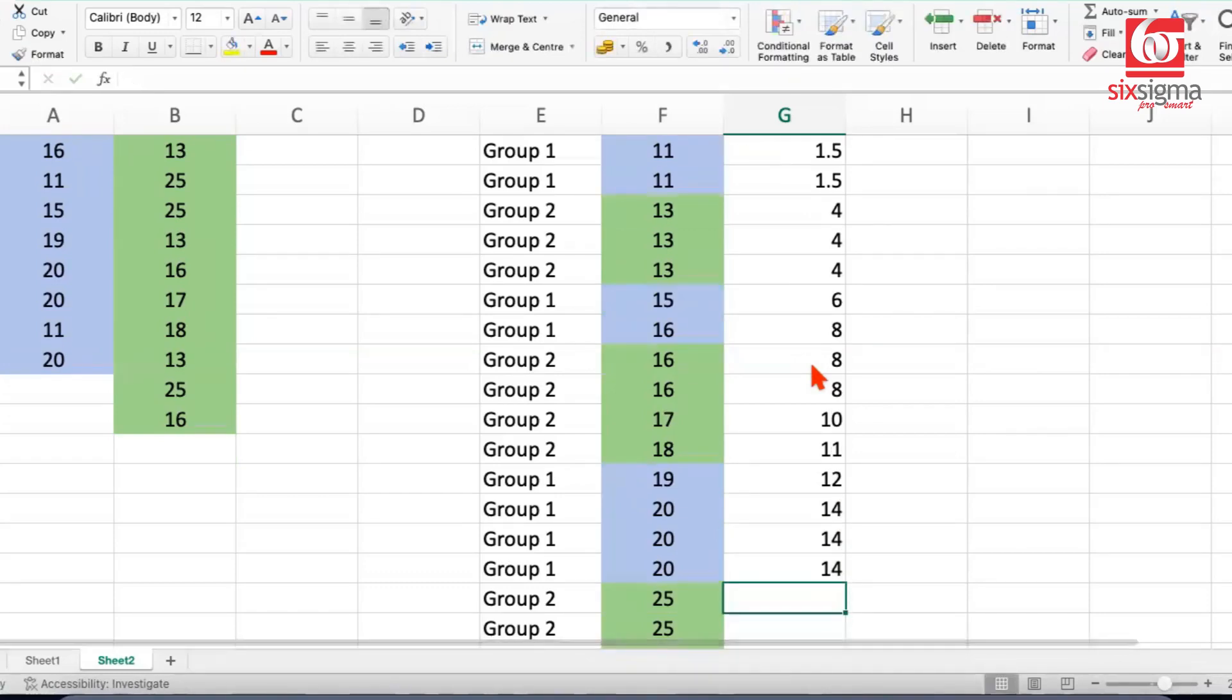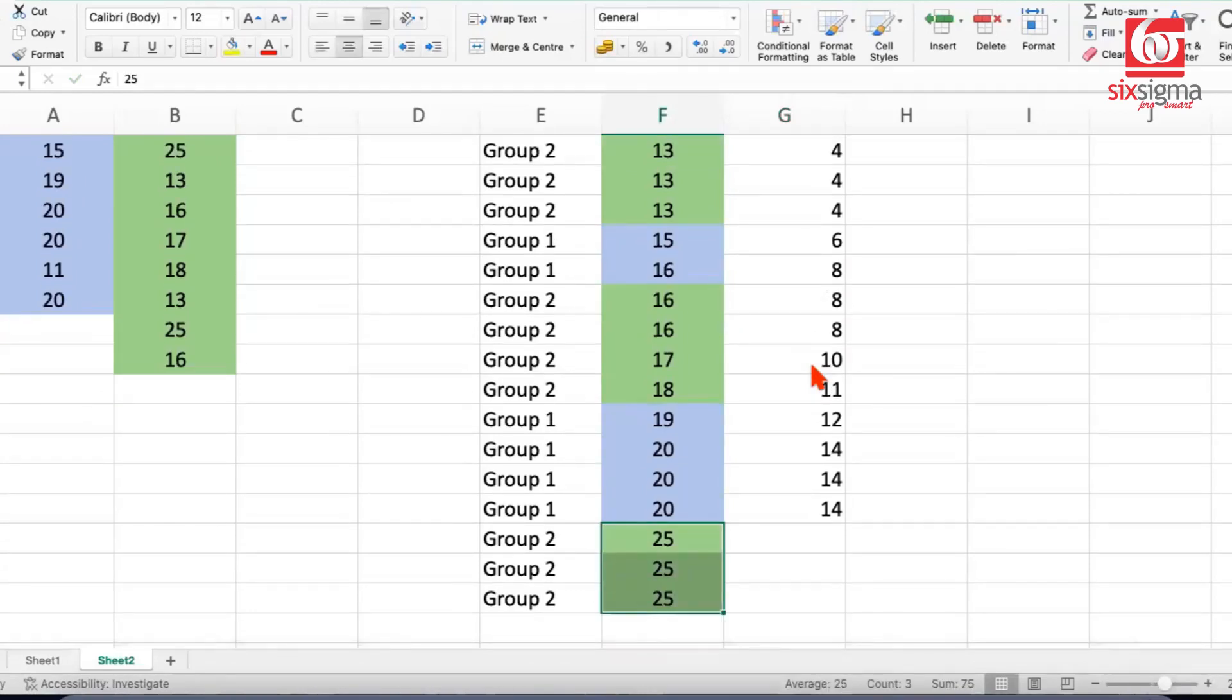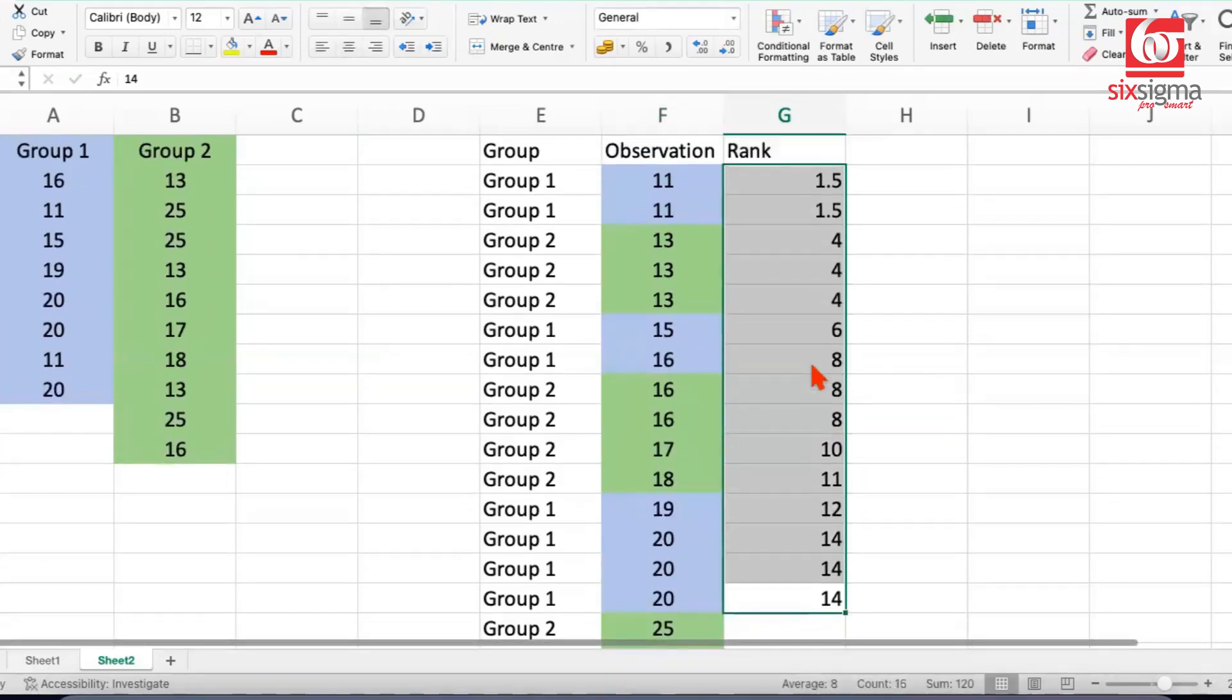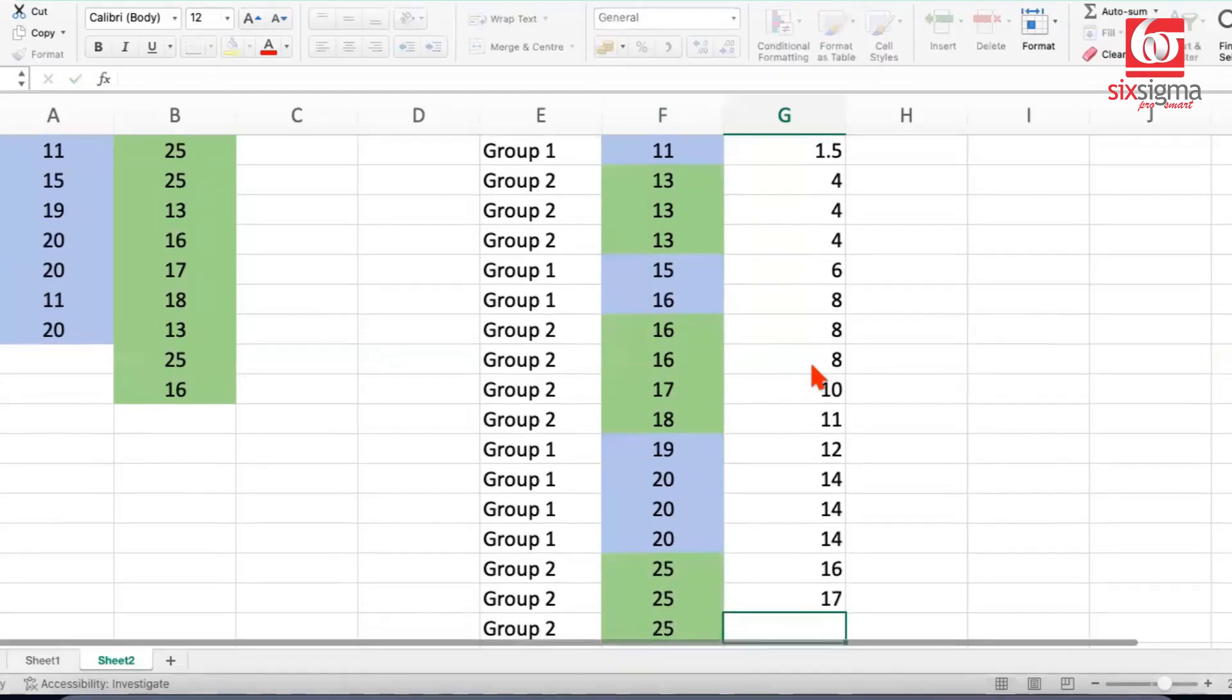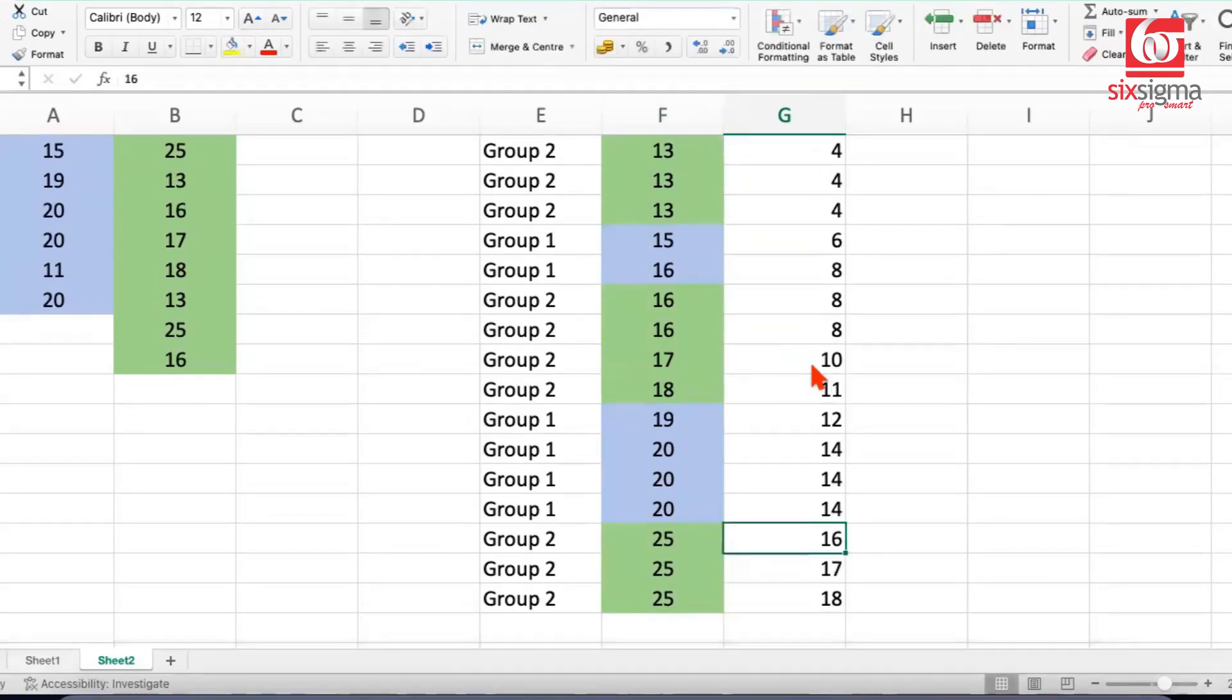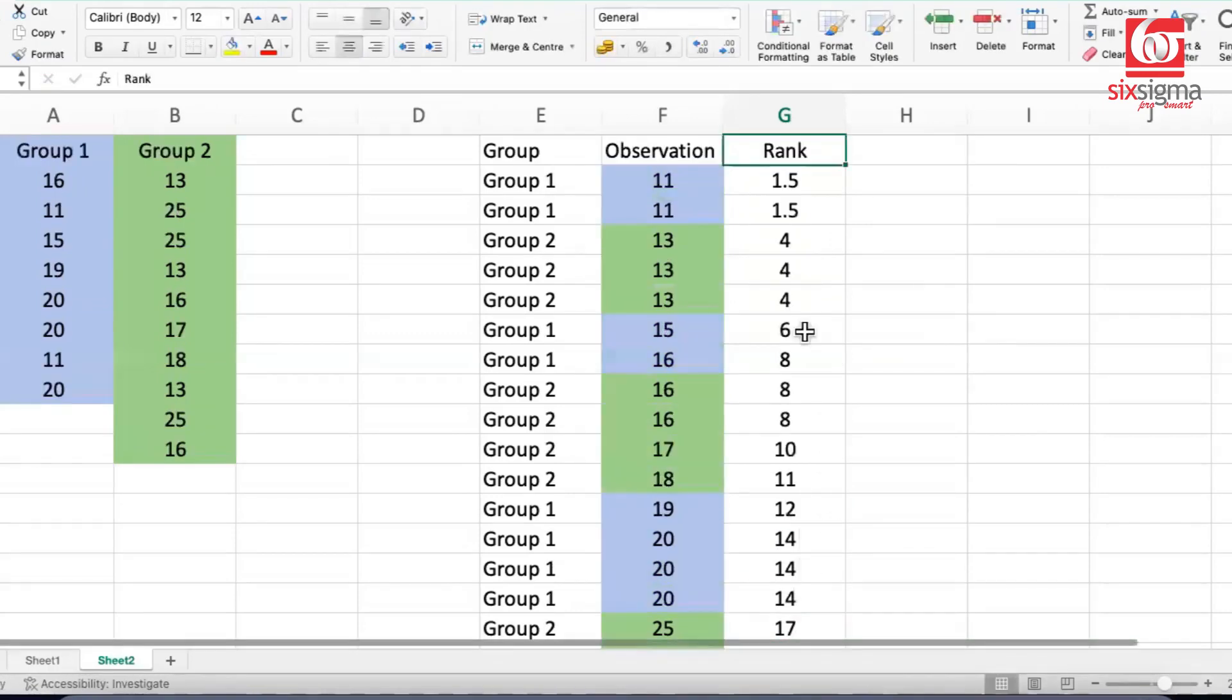Once again, we have ties with 20. We've ranked 12 places, so this is 13, 14, and 15. The average is 14. Finally, we have a tie with 25. We've ranked 15 places, so we place 16, 17, and 18. Initially ranking as if there was no tie, but since there is, we take the average, which is 17. These are the ranks we've obtained using this method of ranking.